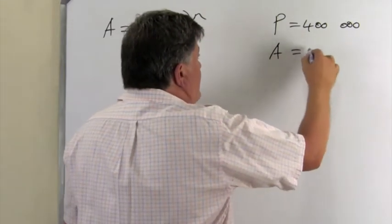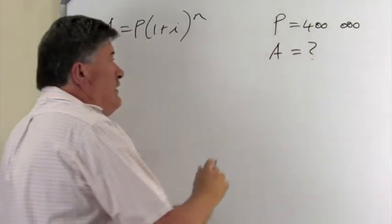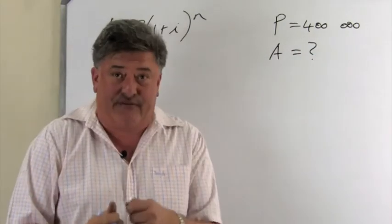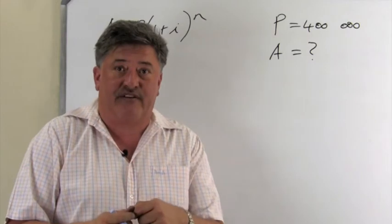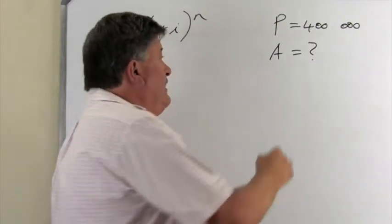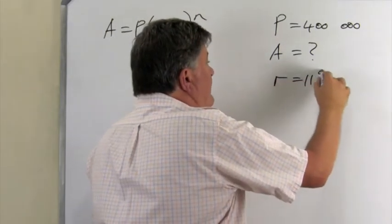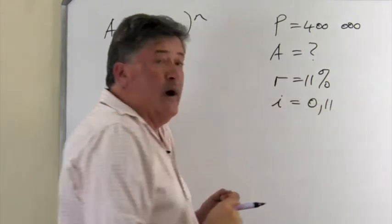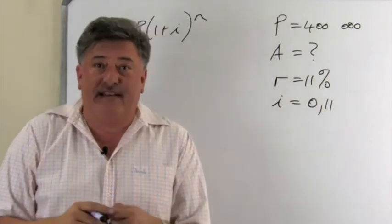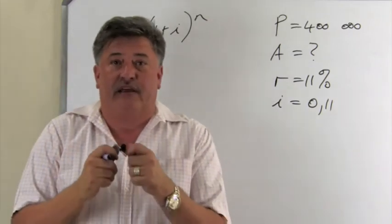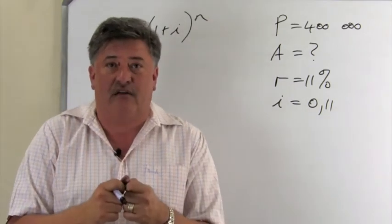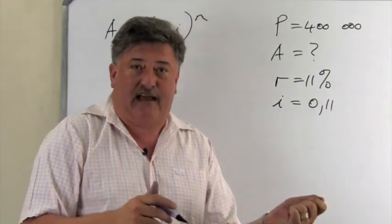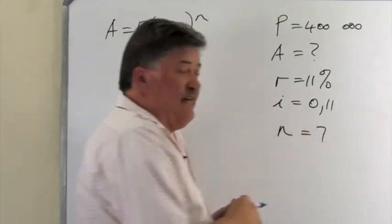That A is what we want to calculate. They gave us the interest rate, or for this particular question, the interest rate means the inflation rate. And that R is 11%. So our i is 0.11. They want us to determine the price of this car in 7 years time. So n will be 7.